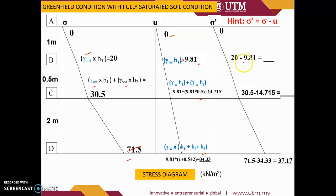To obtain the effective stress, you just subtract the pore water pressure from the total stress. Do this for the rest of the layers and you will get the value of effective stress at D.